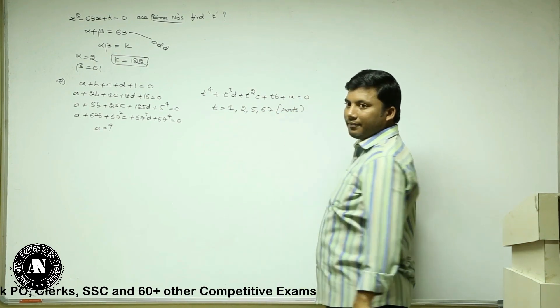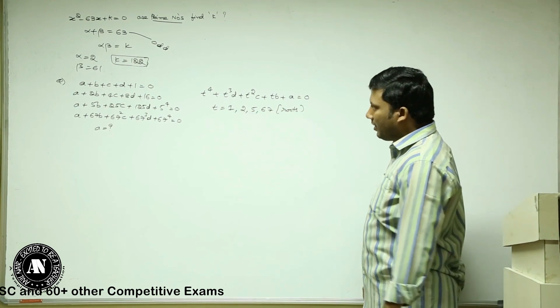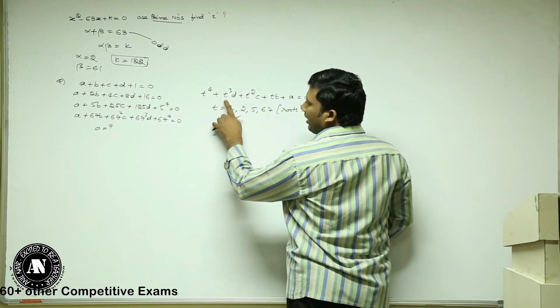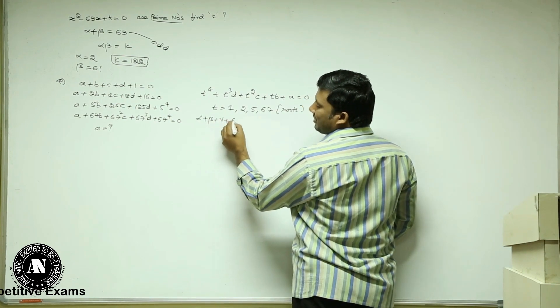Are you all looking? Roots, if you satisfy the equation, it will be simple. Now, what is the sum of the roots taken one at a time? Alpha plus beta plus gamma plus delta is?